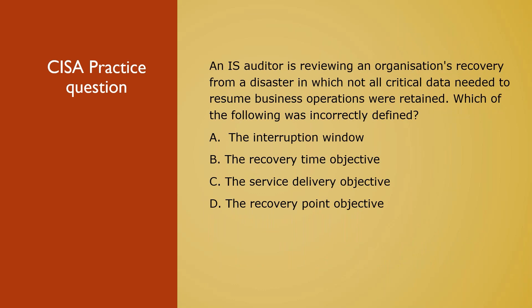Fourth question: An IS auditor is reviewing an organization's recovery strategy from a disaster in which not all critical data needed to resume business operations were retained. Which of the following was incorrectly defined: (A) interruption window, (B) recovery time objective, (C) service delivery objective, (D) recovery point objective? This question relates to DRP, which is part of Domain 4. The core concepts are RPO and RTO. RPO — Recovery Point Objective — relates to data loss. RTO — Recovery Time Objective — relates to downtime. The maximum tolerable data loss is defined by RPO; maximum tolerable downtime is defined by RTO.